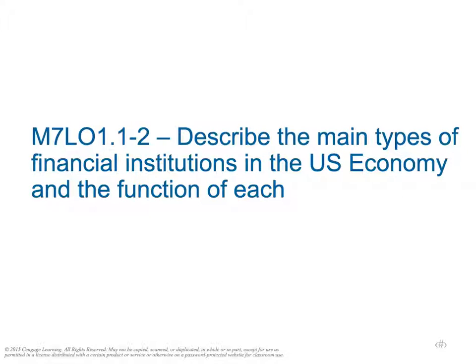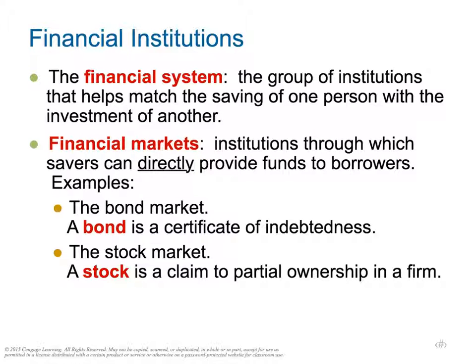Our first objective is to look at the main types of financial institutions in the U.S. economy. A financial system is a group of institutions, and the key idea is that they match the saving of one person with the investment of another. We can categorize financial institutions as: deposit-taking institutions, finance and insurance institutions, investment institutions, pension-providing institutions, and risk management institutions.